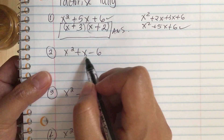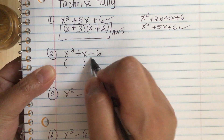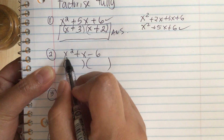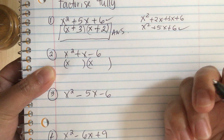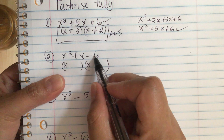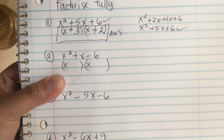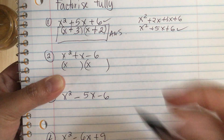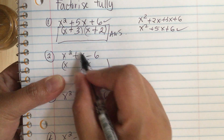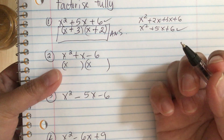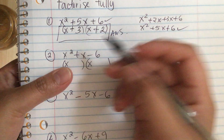Next problem: x squared plus x minus 6. The x squared comes from an x and an x. The minus 6 came from multiplying two numbers, and the middle term comes from combining those two numbers.